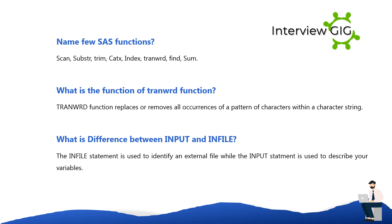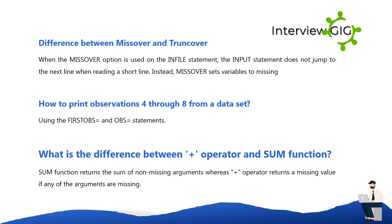What is the function of TRANWRD? The TRANWRD function replaces or removes all occurrences of a pattern of characters within a character string. What is the difference between INPUT statement and INFILE statement? The INFILE statement is used to identify an external file, while the INPUT statement is used to describe your variables. What is the difference between MISSOVER and TRUNCOVER? When the MISSOVER option is used on the INFILE statement, the input statement does not jump to the next line when reading a short line. Instead, MISSOVER sets variables to missing.